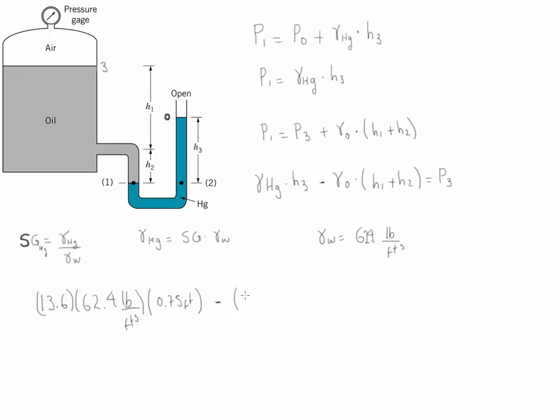Then we do minus, and then we do the same process. The gamma of oil is going to be the specific gravity of the oil, which in this case is equal to 0.9, multiplied by 62.4 pounds per cubic feet, and then we add the two heights. H1 is equal to 36 inches and H2 is equal to 6 inches. That is equal to 42 inches, and in feet that is equal to 3.5 feet.